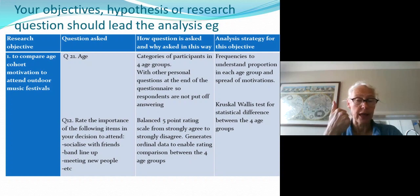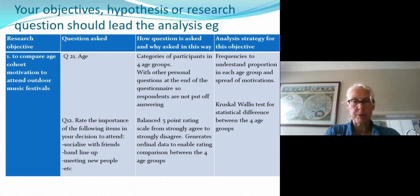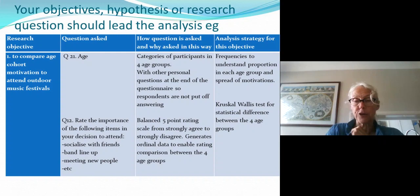In order to address that research objective, you also need to know about motivations to attend outdoor events, so you'd have a question — say Question 12 — which rates the importance of certain items in the decision to attend: socializing with friends, the band lineup, meeting new people, and other items captured from your literature review. In terms of age, you'd capture this in categories — four age groups — placed at the end of the questionnaire so you don't put people off at the start. For Question 12, you'd use a balanced five-point rating scale from strongly agree to strongly disagree, generating ordinal data.